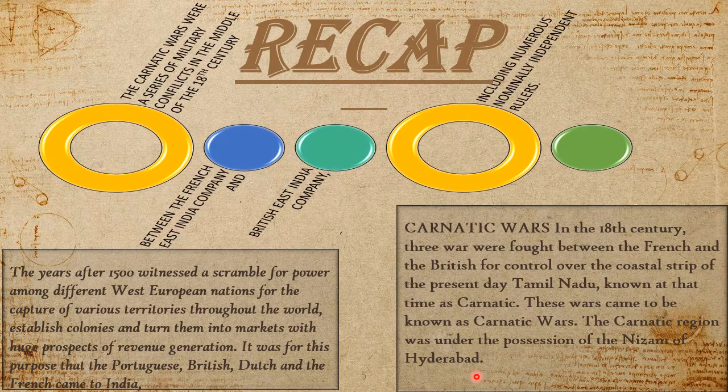The Carnatic Wars take their name from the Carnatic region — the name given to the Coromandel Coast and its hinterland. The outcome of the three Carnatic Wars saw the British establish their political influence over the Carnatic.